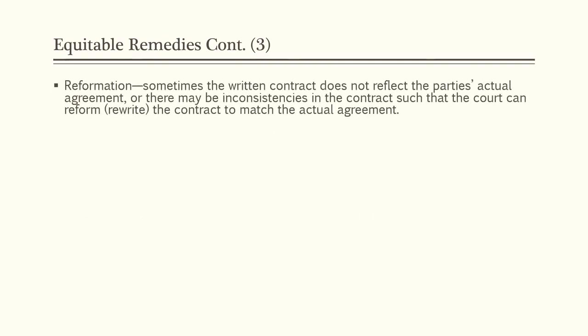The next equitable remedy is reformation. Sometimes the written contract does not reflect the parties' actual agreement, or there may be inconsistencies, such that the court can reform or rewrite the contract to match the actual agreement. An example would be a real estate contract where the price in numbers does not match the written amount — $10,000 written out but $100,000 in numerals — forcing the court to rewrite the contract with the correct price. Another common reformation issue is survey information in a real estate contract that does not match the address or plotting information.